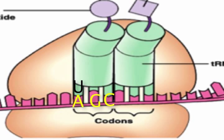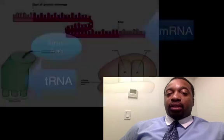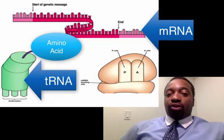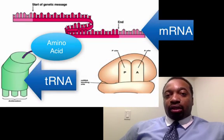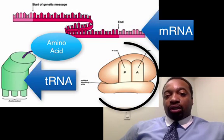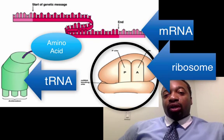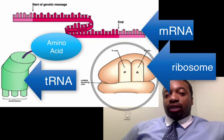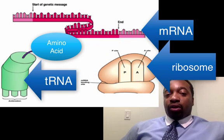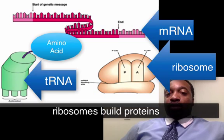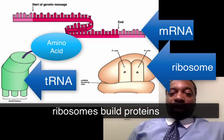We also need something that's going to actually create the protein, and those are our ribosomes. Ribosomes are organelles in our cells that are going to read the message, take the amino acids, and attach them together.